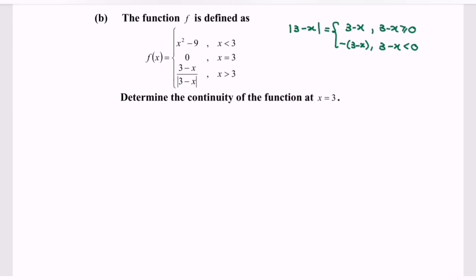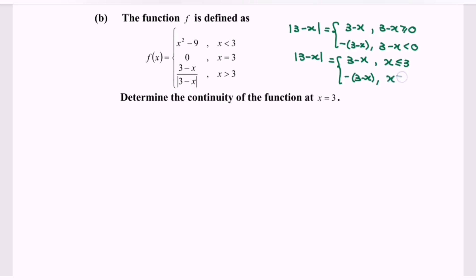Rewriting the situation: |3 minus x| equals 3 minus x where the domain is x less than or equal to 3, and negative (3 minus x) where the domain is x greater than 3.